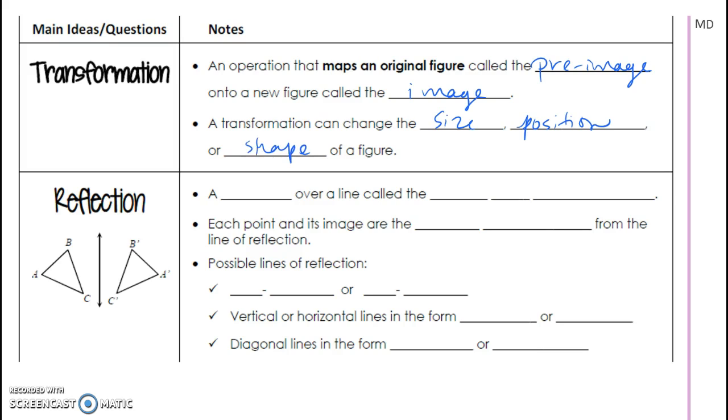So we're going to be talking about dilations, translations, reflections. Like all of those is what a transformation can do to something. And the first one we're starting with is reflection. So basically, if you want to think about a reflection as a mirror image or a flip, most people say flip because that's easier than reflection. It's going to be a flip over a line called the line of reflection. Like I mentioned just a second ago, the line of reflection. Each point and its image are the same distance from the line of reflection, just like I was showing you on that first example there.